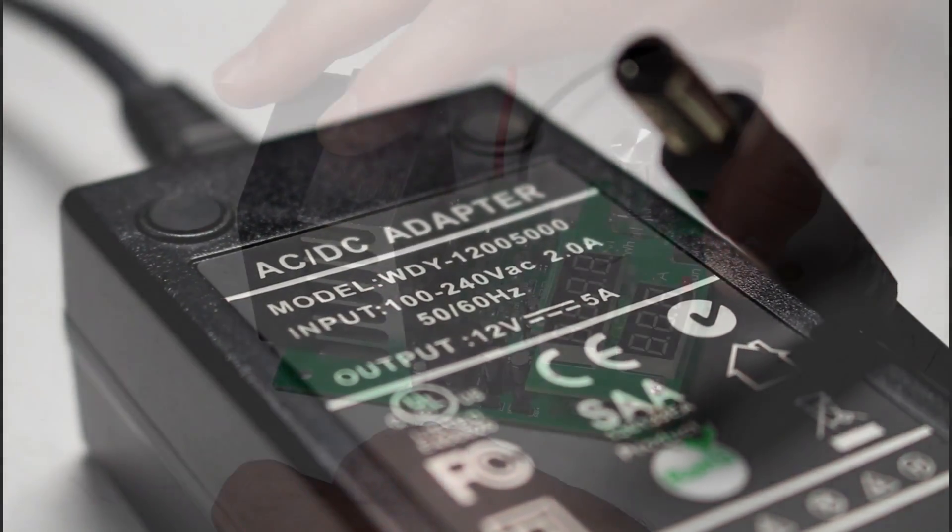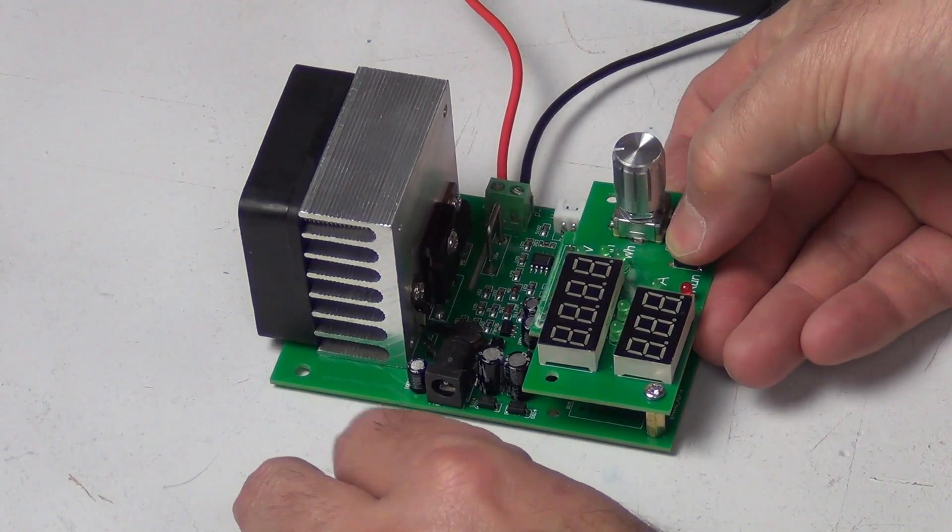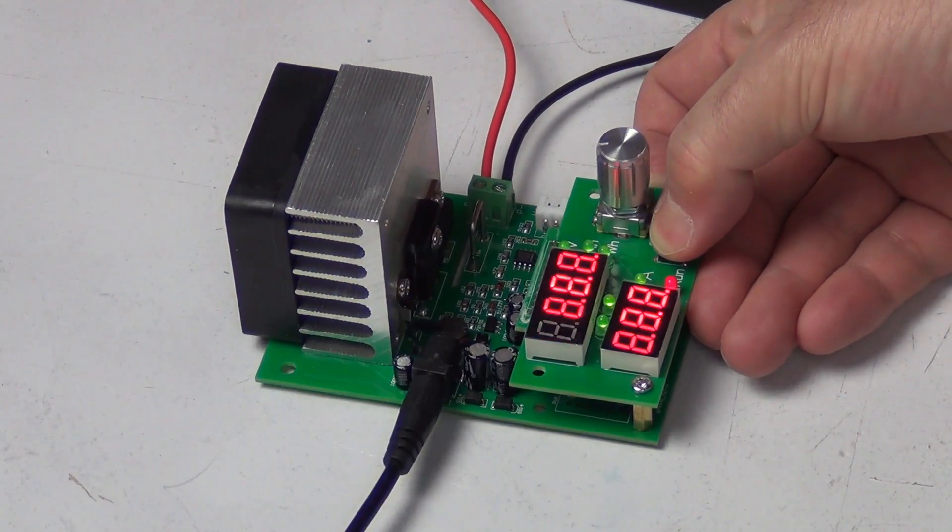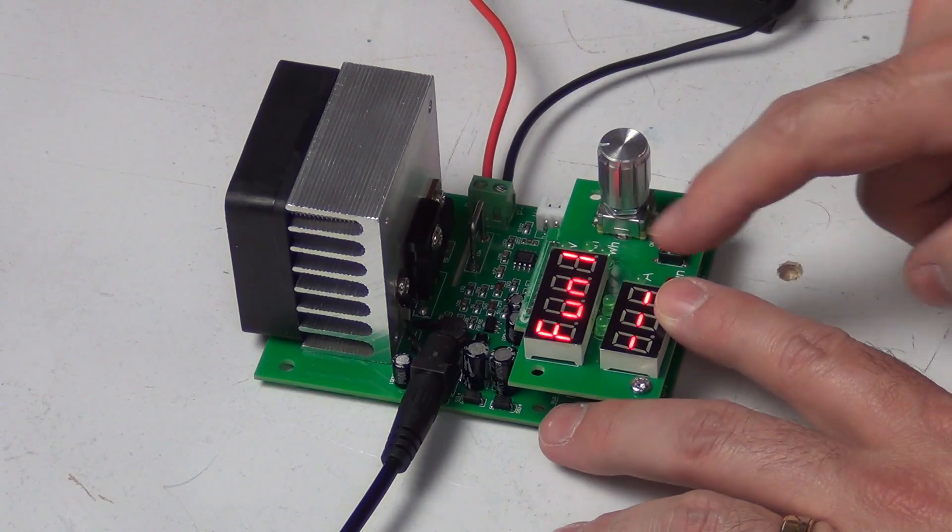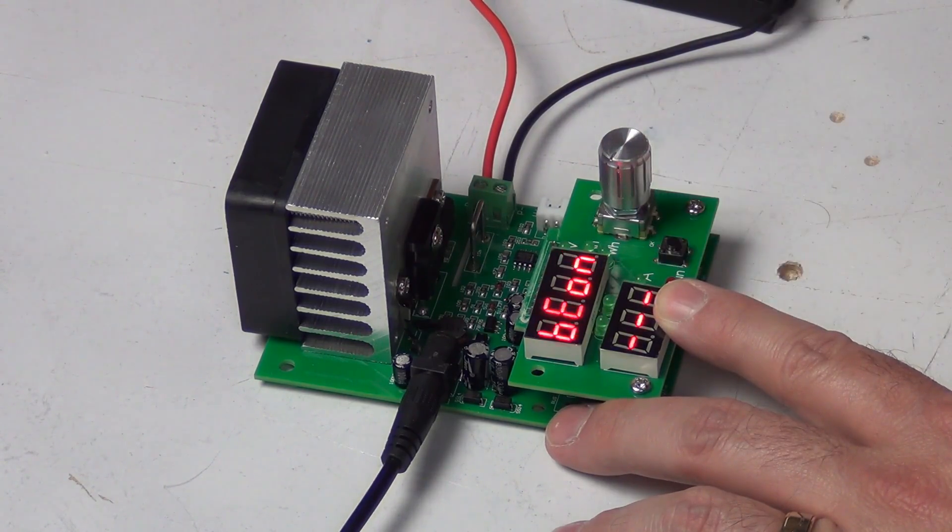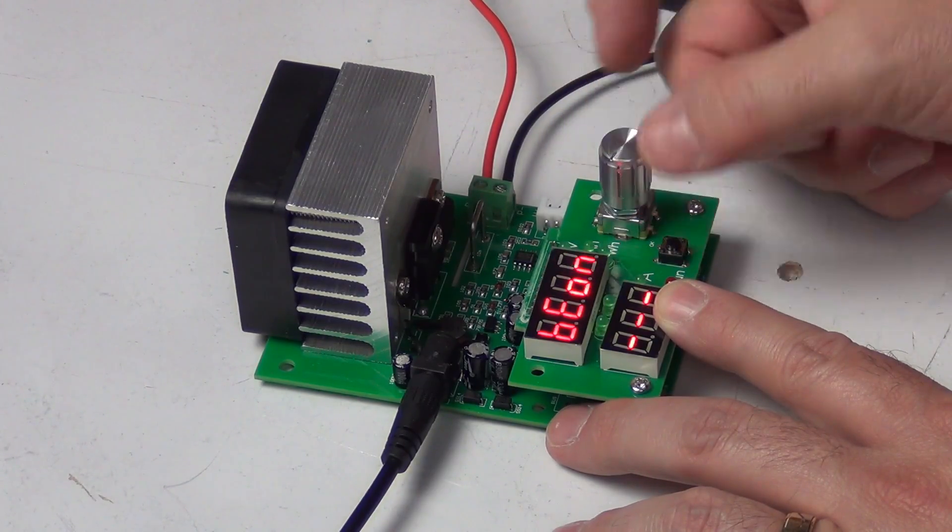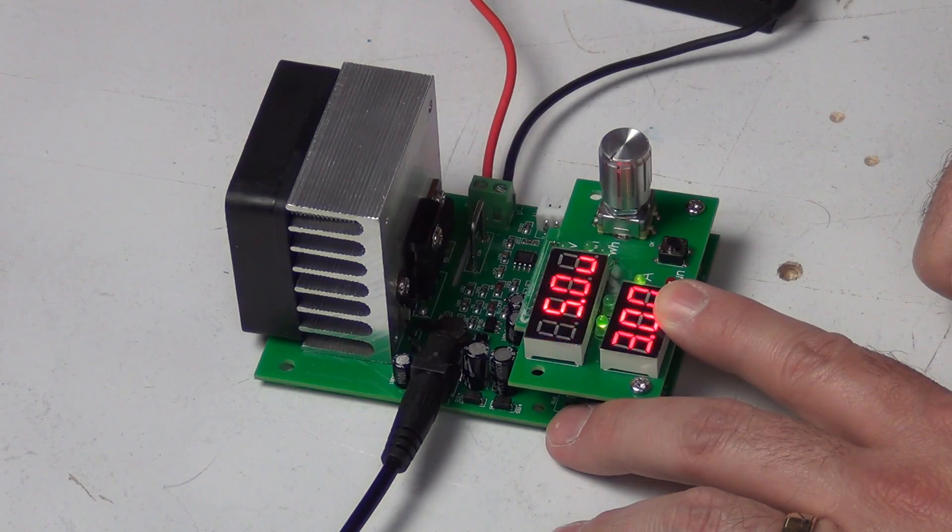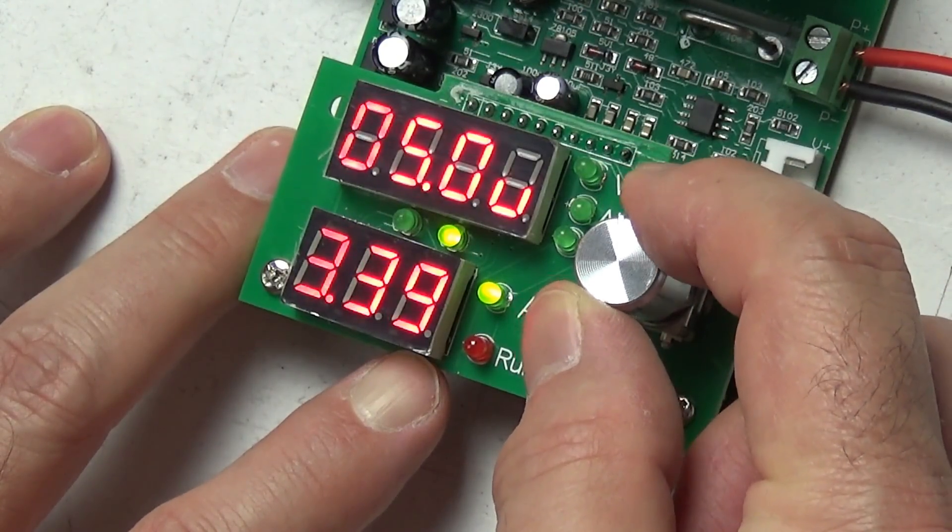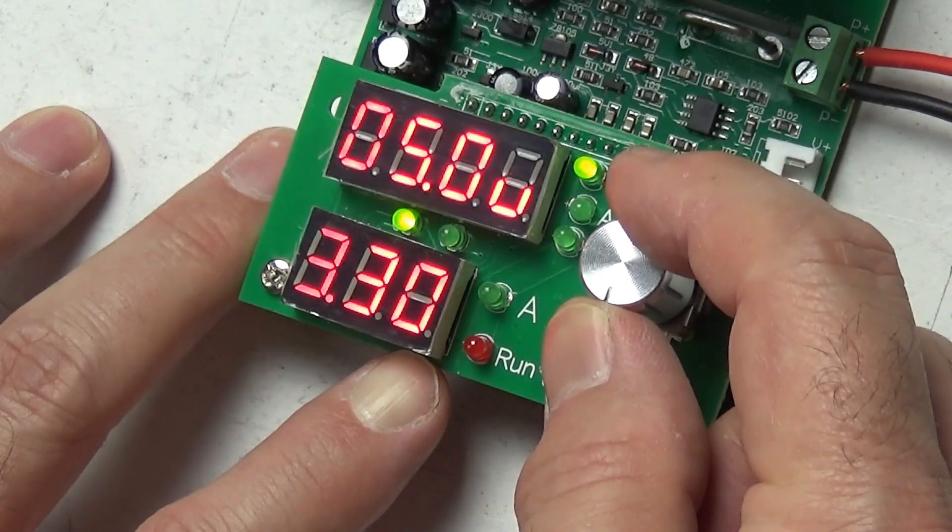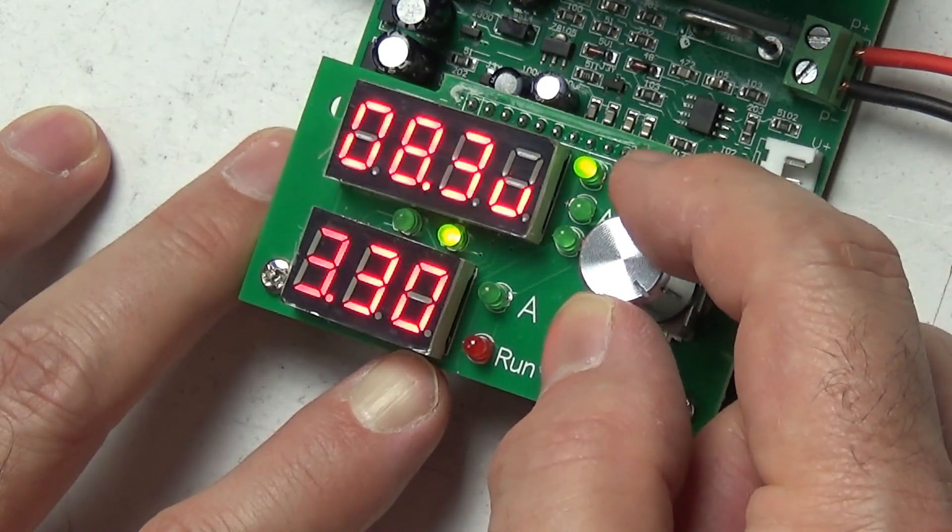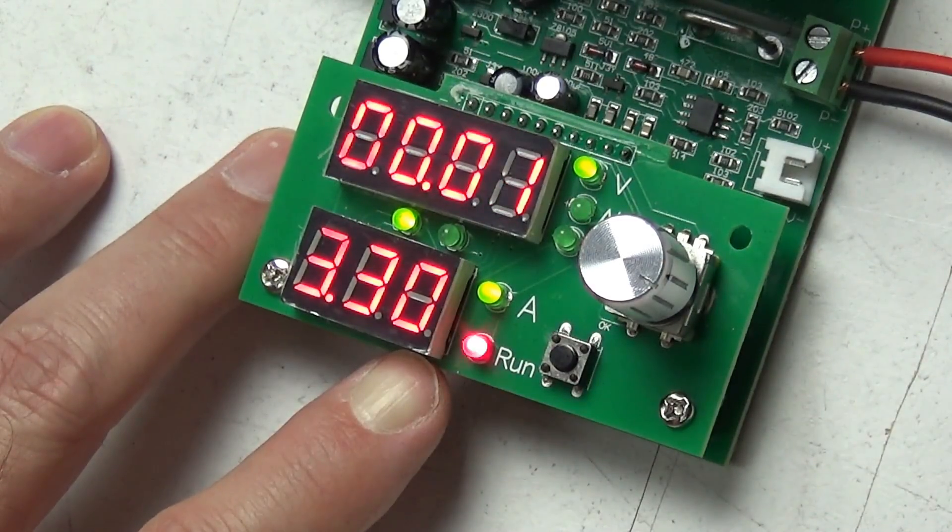In order to select between electronic load and battery testing function, hold down the little black run button before you connect the external power, hold it down until you see the function selection pop up on the little LED display and turn the dial to function one or function two. Function one is the electronic load, function two is the battery testing mode. Once you've got your load or battery hooked up, you simply select the settings that you want using the silver dial and pushing it down to increment between tenths and hundredths.